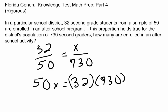In other words, 50x equals 23,360. Next, we solve this equation for x by dividing by 50 on both sides.